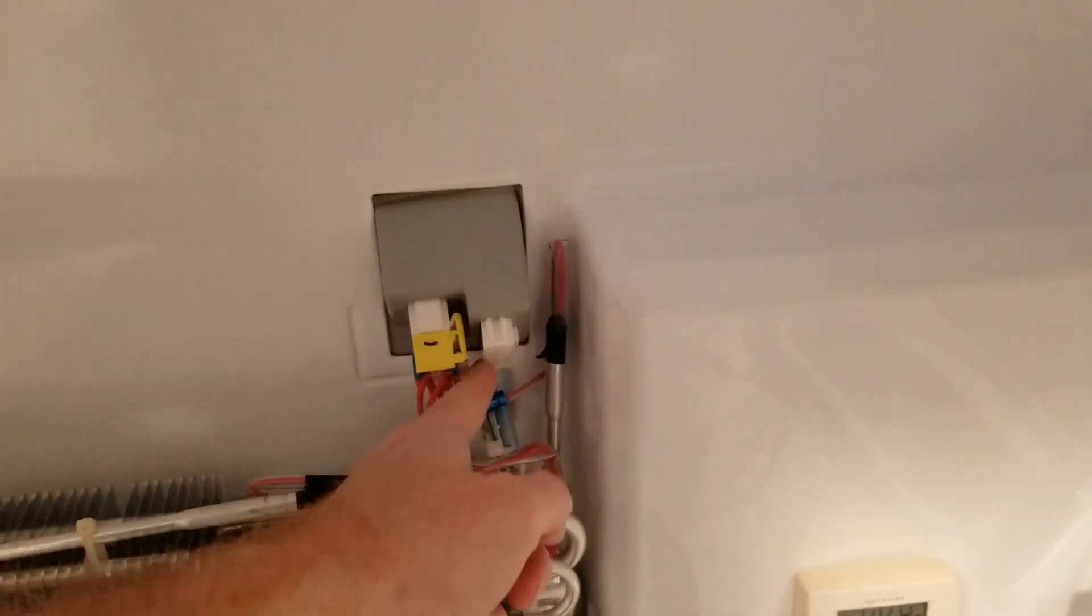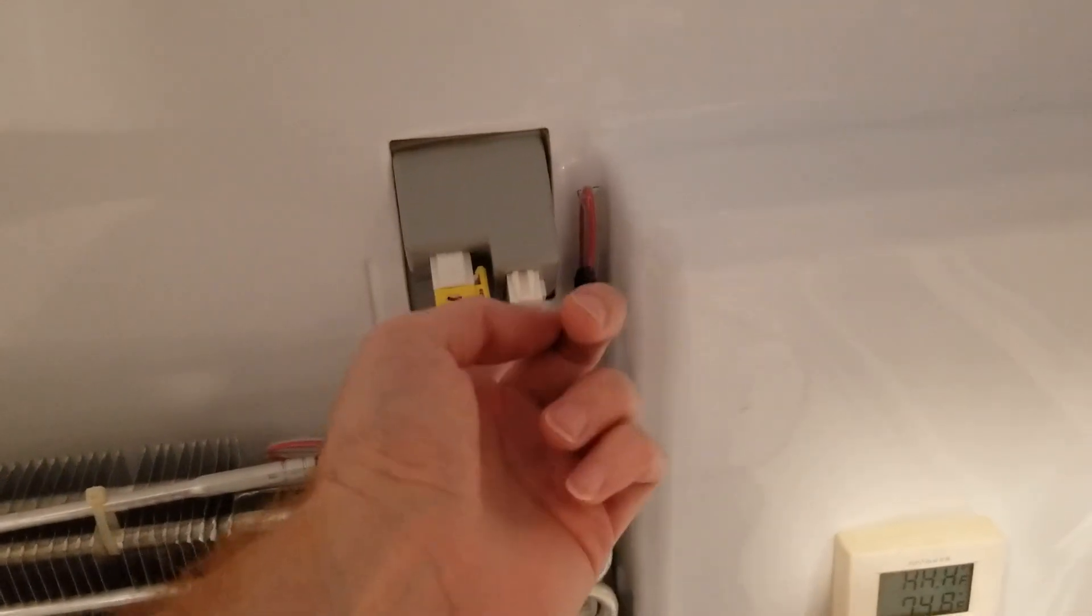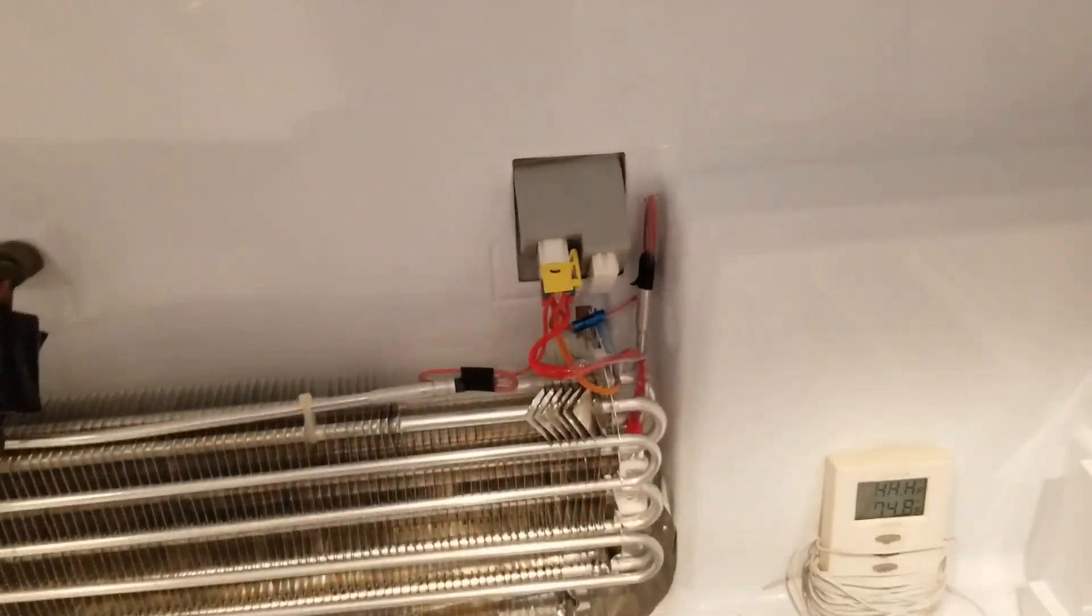There'll be two screws holding in the back, one up here and one down here. They'll be behind clips, so unscrew those. The back piece will be attached to this connection back here, so remove that and then the whole back should come right out.